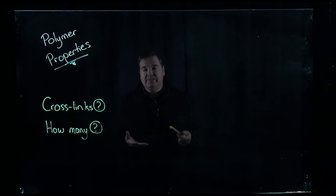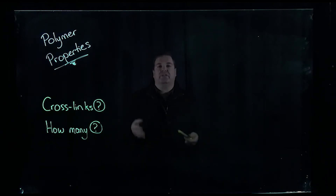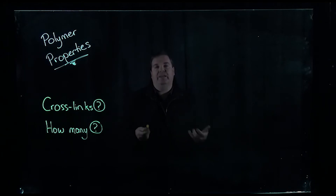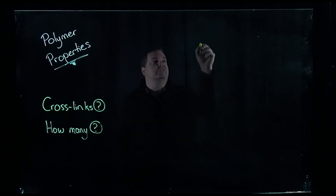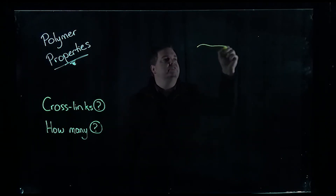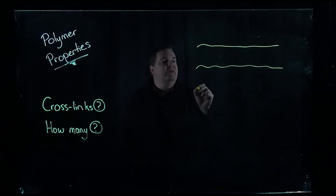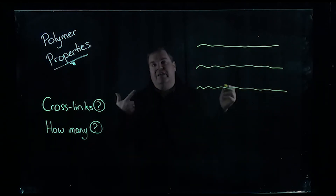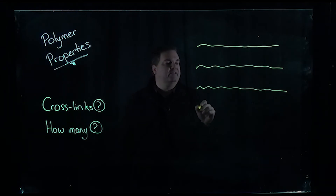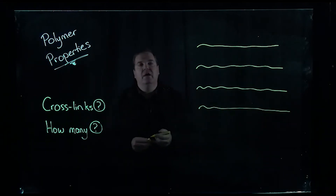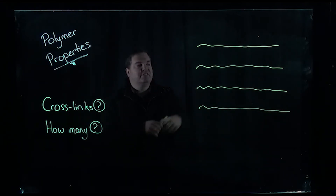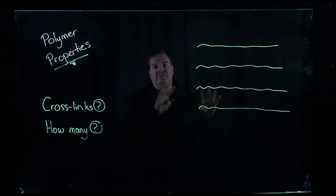What I always explain to my students first is that when you're trying to think of a polymer, think of it like a plate of spaghetti, where you've got all these long individual strands. These are your long polymer chains, all made up of thousands and thousands of carbon atoms. So initially, this is your most basic polymer — you've got these long strands.